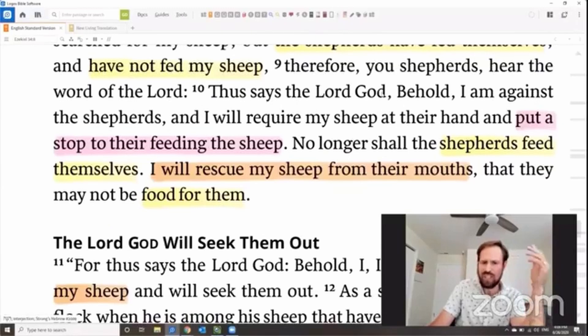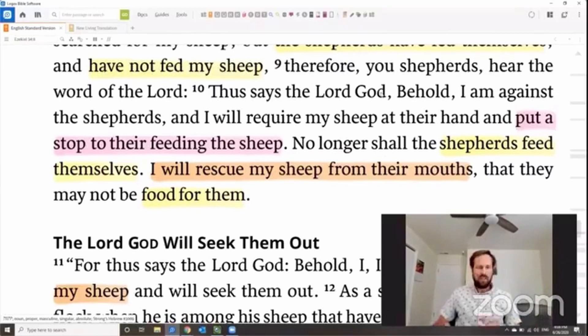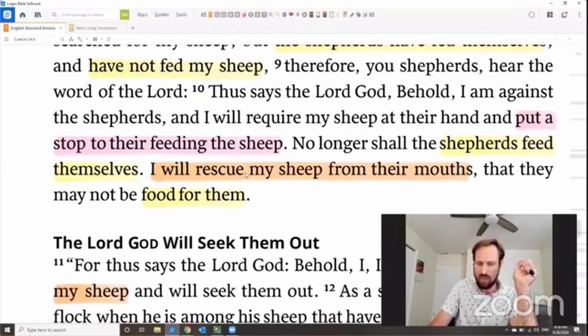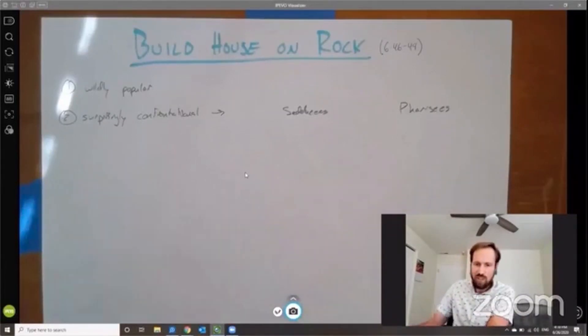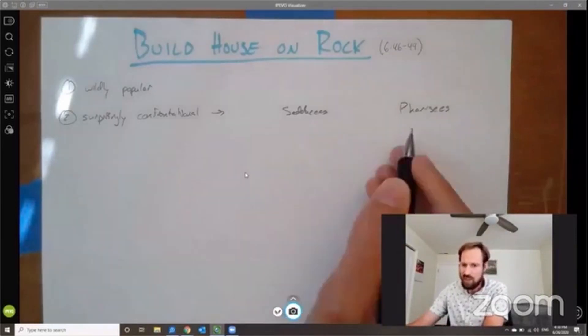Behold, Jesus says, I am against the shepherds, and I will require my sheep at their hand. They're not going to be shepherds over my sheep anymore. No longer shall the shepherds feed themselves. I will rescue my sheep from their mouths, that they may no longer be food for them. So Jesus' confrontation with these two groups, the Sadducees and the Pharisees, it's really a rescue mission. He's rescuing the people of Israel from their incompetent and selfish and self-serving leaders. So he's going to do that. He's going to confront each of these groups.